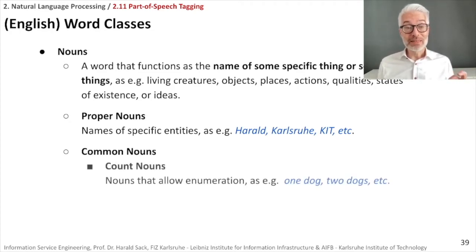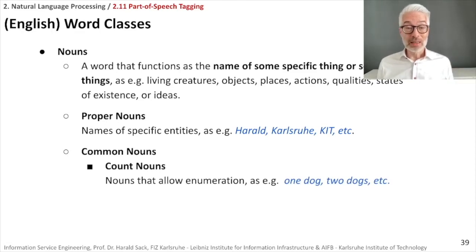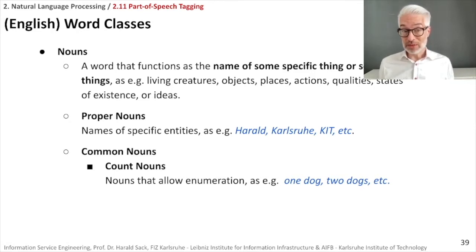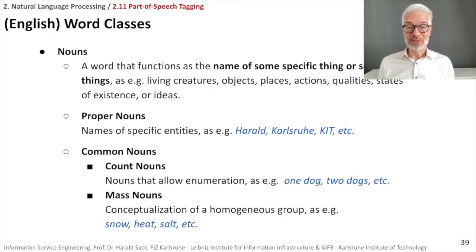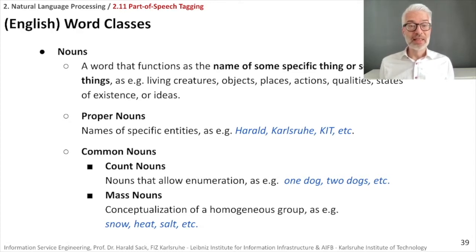With common nouns, we distinguish so-called count nouns — nouns that allow enumeration, so I can say one dog, two dogs, one city, two cities. And there are mass nouns, which are conceptualizations of homogeneous groups. For example, you can't count snow, heat, or salt — it doesn't make sense to say one snow, two snow, three snow. These are mass nouns, just as a distinction.